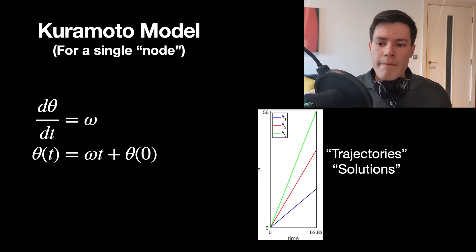Theta one has a smaller intrinsic frequency, so it's a line with a lower slope, and theta three is an oscillator with a larger frequency, so it has a steeper slope. Solutions of this equation are called trajectories and they represent, given some initial condition, the equations for the line — three different trajectories for three different parameter values of omega.